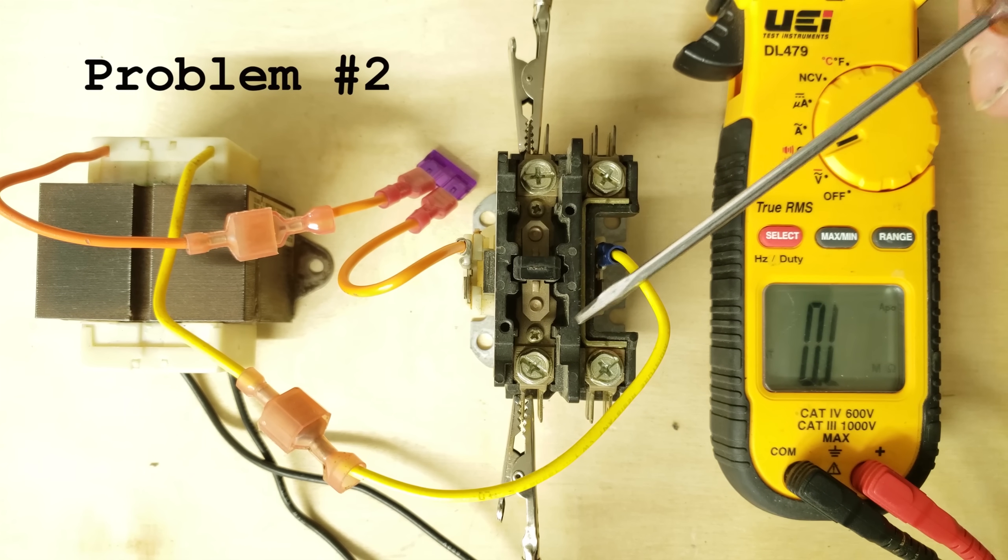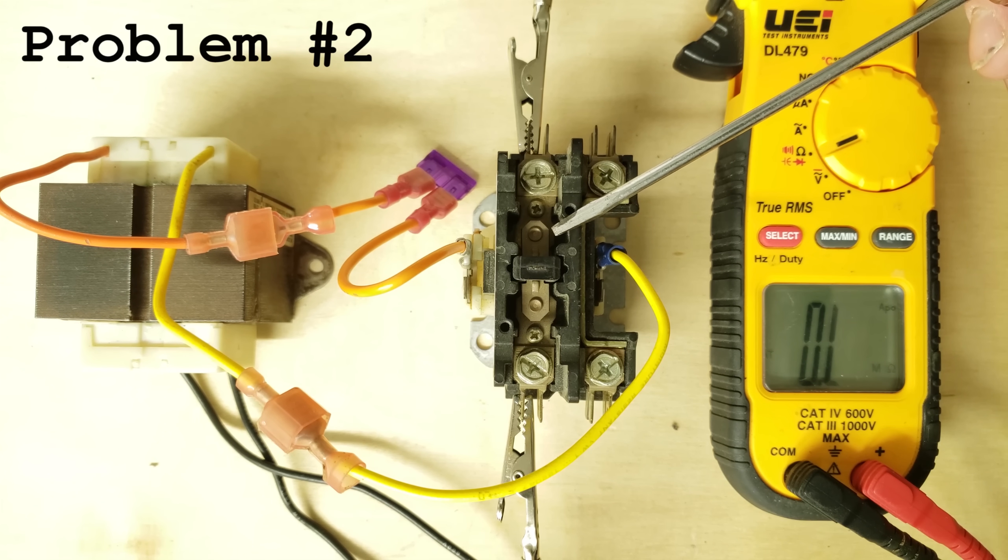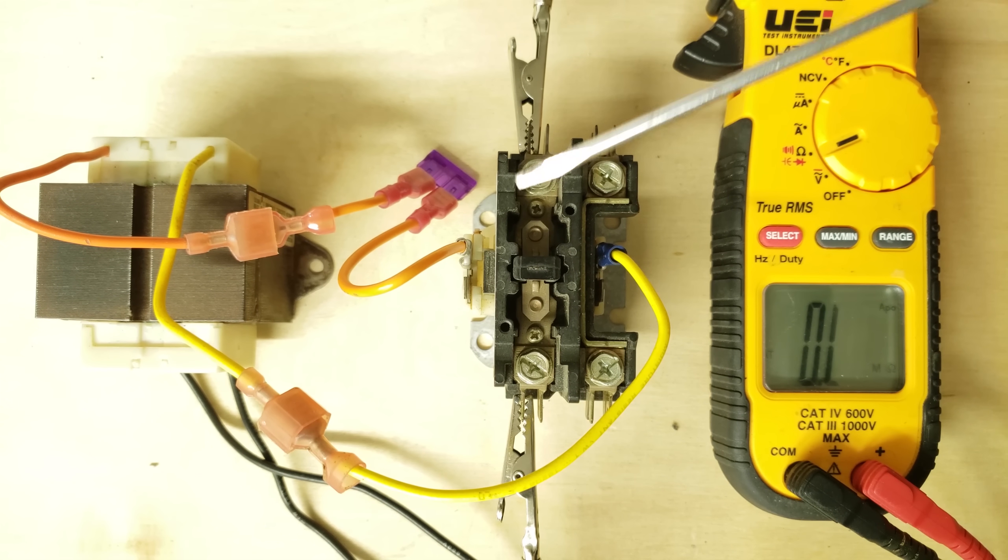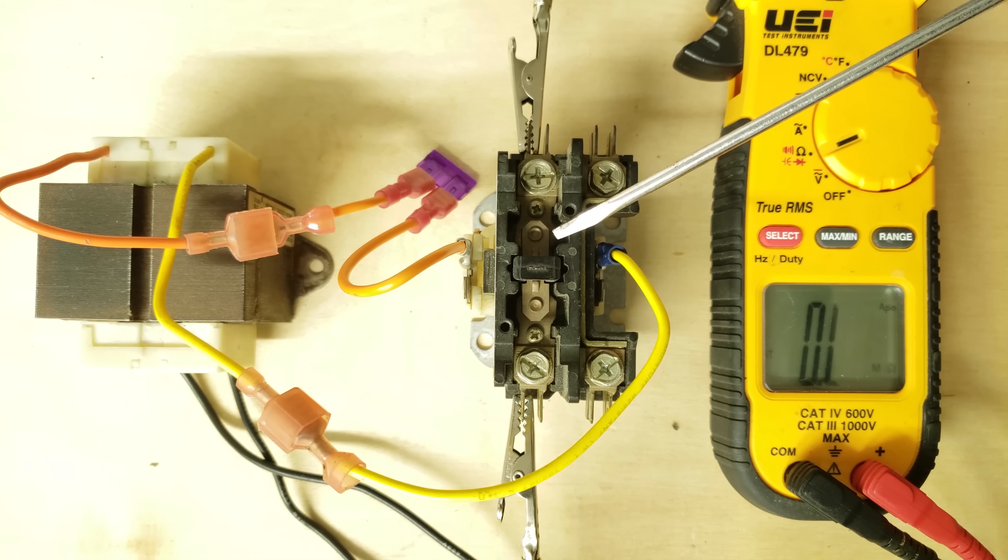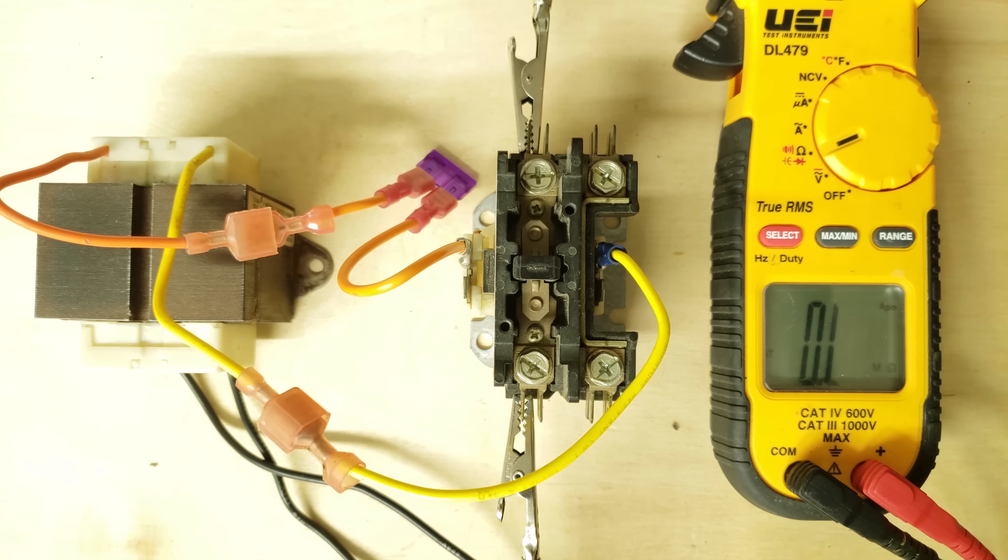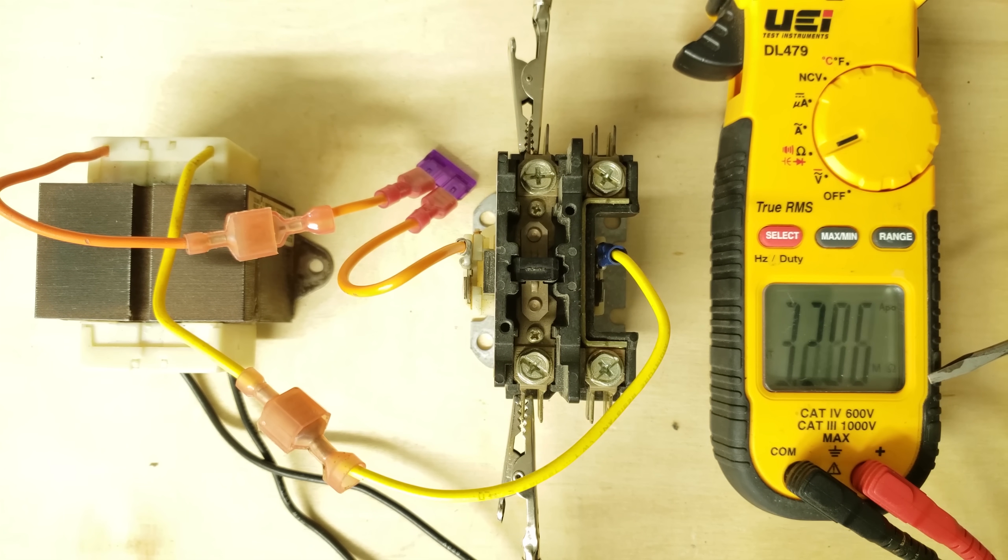Problem number two is when you have a high resistance reading across the contacts and that could be due to some of the pitting on the actual contacts themselves inside. They're just not making a connection when we power the contactor. Right now you see we're reading OL which means open line. Now we're going to go ahead and power the contactor with 24 volts. You see that we're reading mega ohms right now.